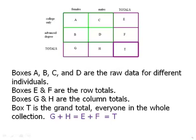Finally, T, that bottom right-hand box, is the grand total. That's everyone in the whole company. And we can get that either by adding across the bottom row, G plus H equals T, or we can add down the right column, E plus F equals T. And so everything should check, all those sums should be equal.